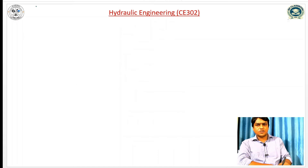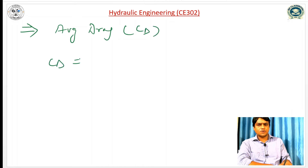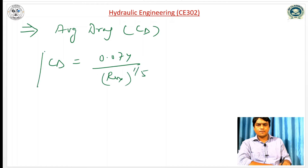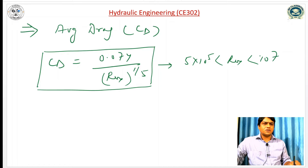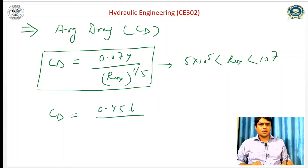Similarly, the expression of average drag coefficient CD: CD = 0.074 / (Re)^(1/5), and this formula is applicable when the Reynolds number lies up to 10⁷. Otherwise we have to apply: CD = 0.456 / [log₁₀(Re_L)]^2.58, which is applicable when the Reynolds number lies between 10⁷ to 10⁹.